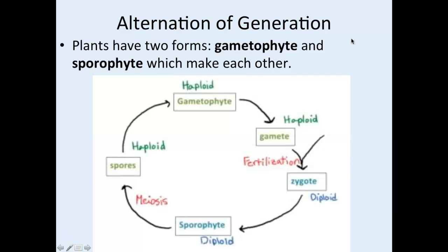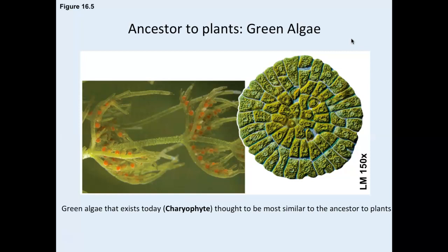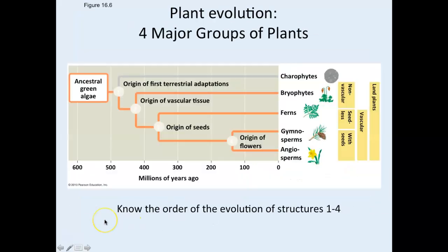Because they cycle between these two life stages, we call it alternation of generations. We'll look at some examples that will hopefully make this clear. And before we move on, remember that the ancestor to all plants is green algae. The carophyte, which exists today, is thought to be most similar to the ancestral plant.